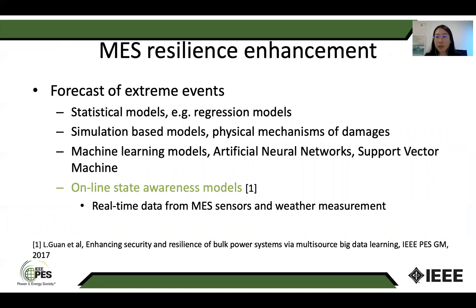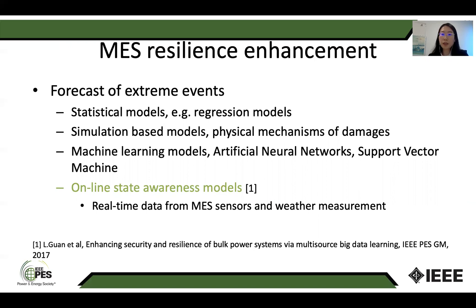For multi-energy system resilience enhancement, it is important to study the anticipate phase one. We need better-focused models for extreme events. Traditionally, we have statistical models such as regression models and simulation-based models focused on physical mechanisms of damage, and machine learning models such as artificial neural networks and support vector machines. Nowadays, there are online state awareness models used to assess power system security problems, where the model instantaneously determines the output through classification or regression procedures according to real-time data from phasor measurement units. Such a model can be extended to the multi-energy system resilience problem, using measurements from different sensors across different energy systems for online state awareness of resilience.